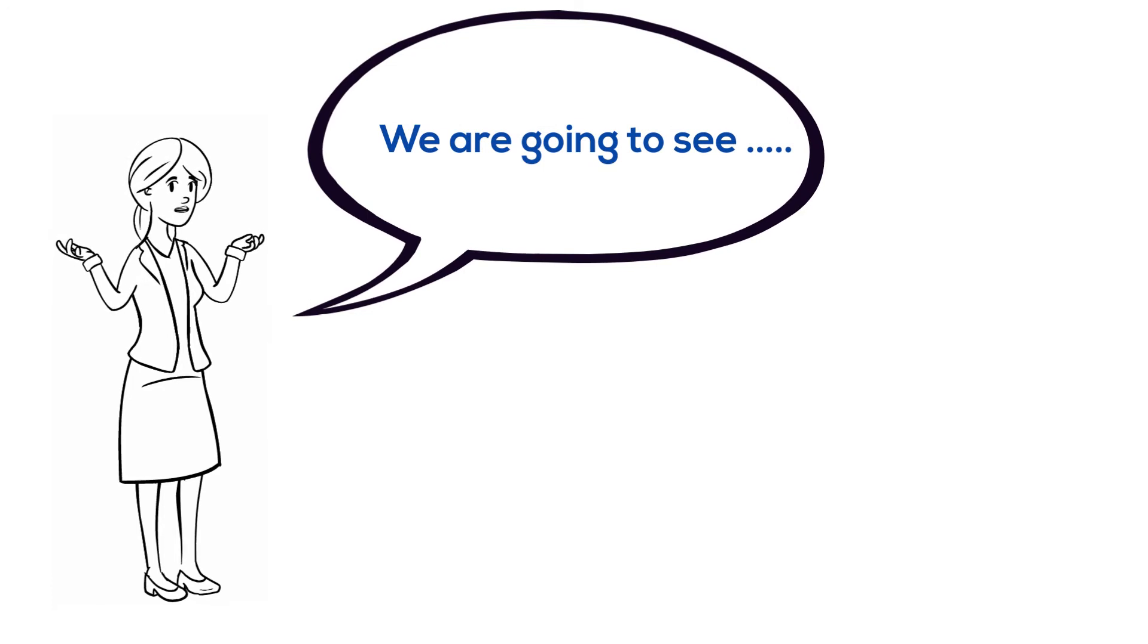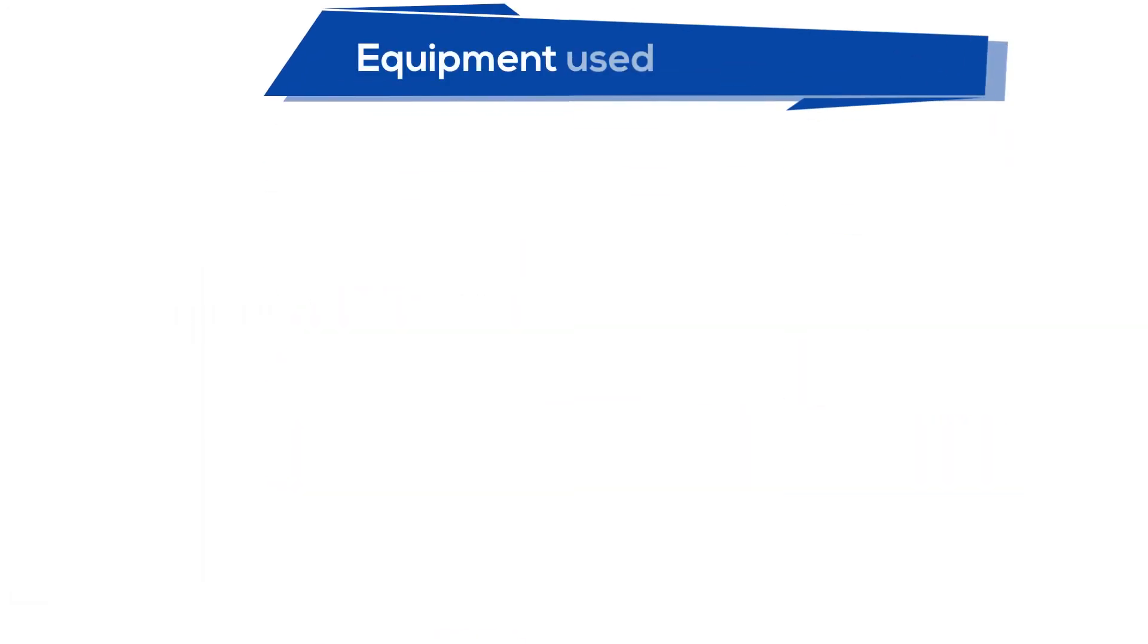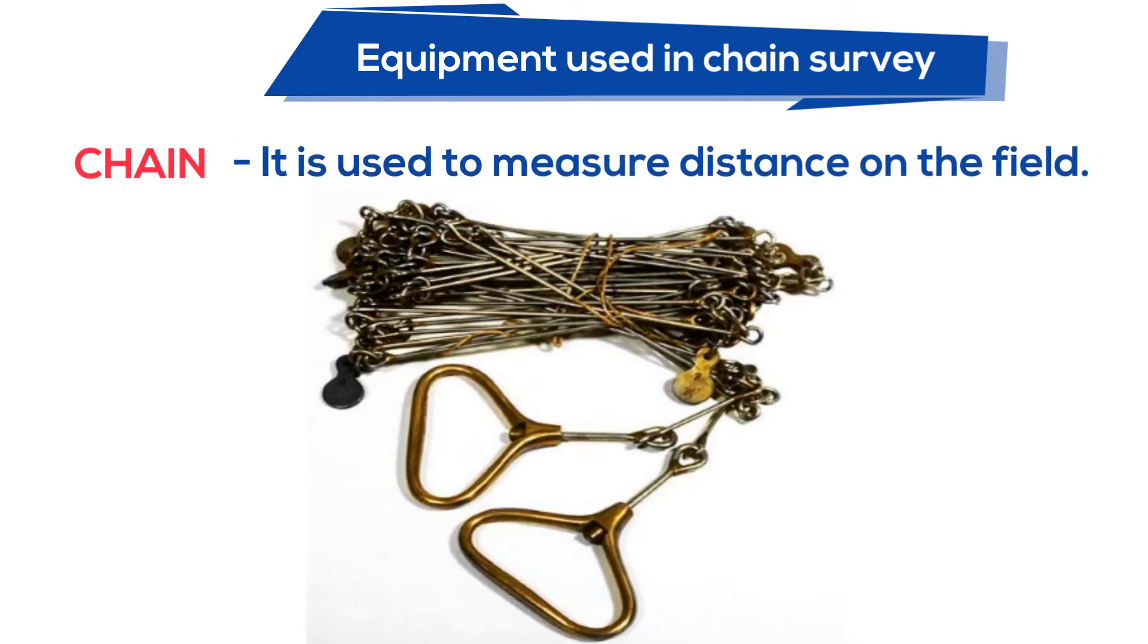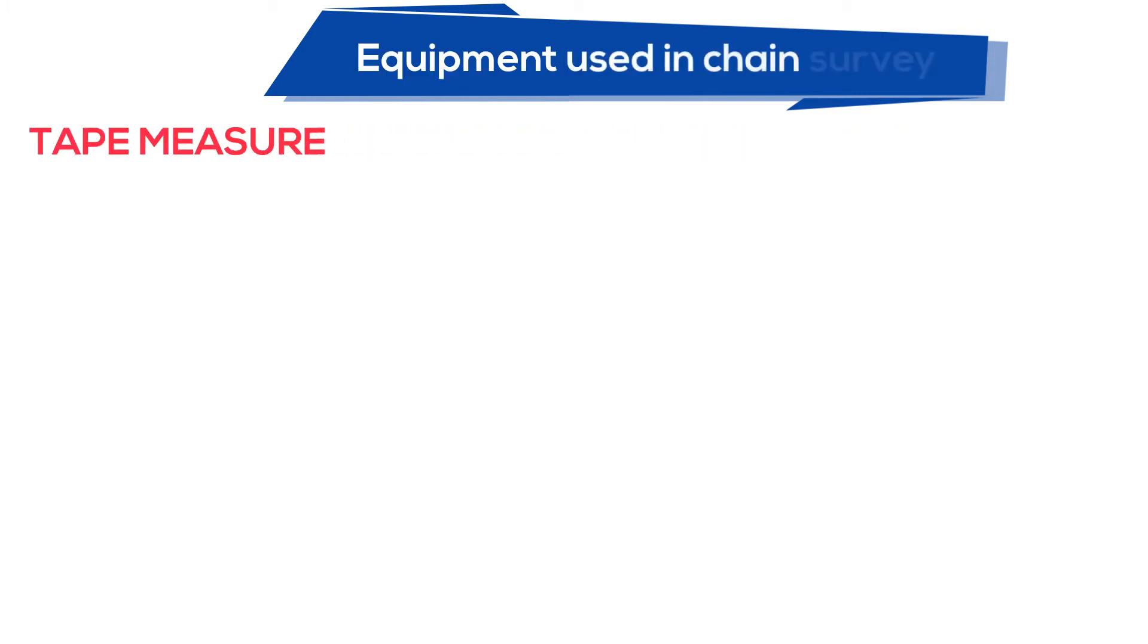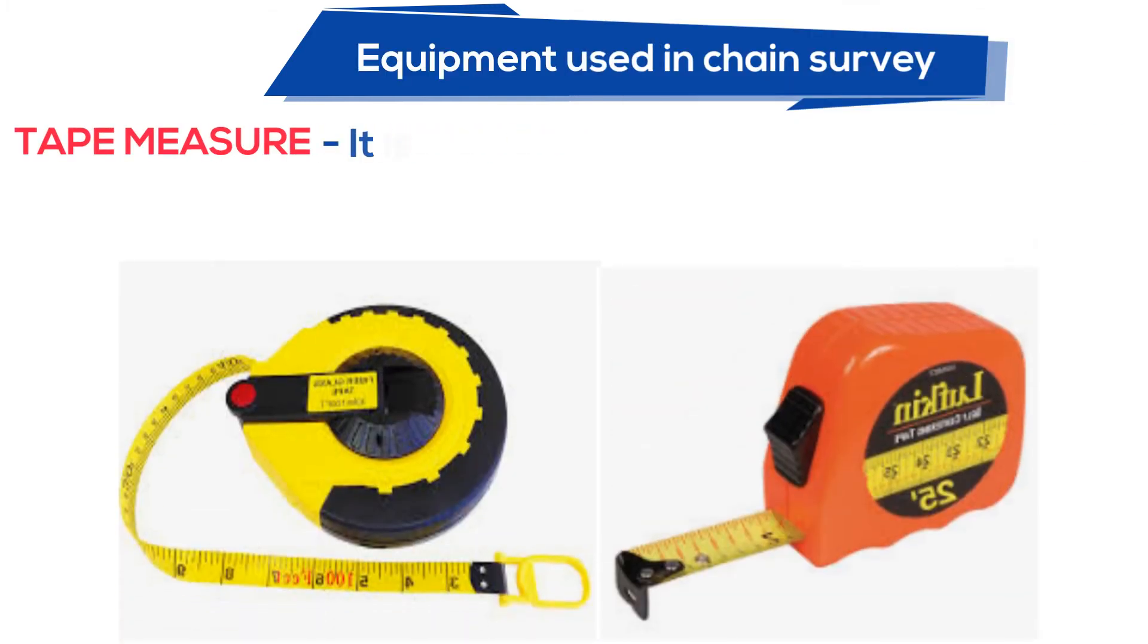We are going to see equipment used in chain surveying. Chain, it is used to measure distance on the field. Tape measure, it is used to measure distance on the field.